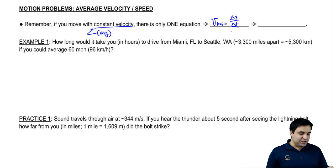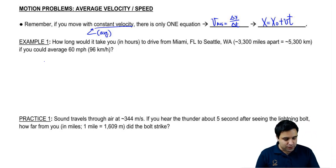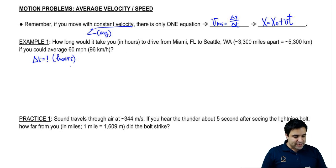There's a variation, a different version of this equation which says that x final equals x initial plus vt. I call that the position equation. So first example right away here, how long would it take you in hours to drive from Miami to Seattle?